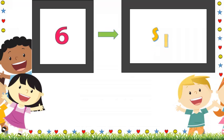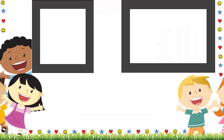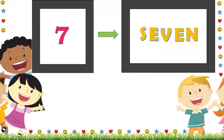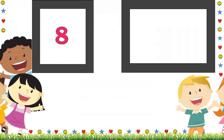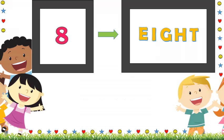Next one is six. Let us see the word: S-I-X. Six. Let's repeat: S-I-X. Six. Our next number is seven. Let us see the word: S-E-V-E-N. Seven. Let us repeat it: S-E-V-E-N. Seven. Our next number is eight. E-I-G-H-T. Eight. Let us repeat it: E-I-G-H-T. Eight.